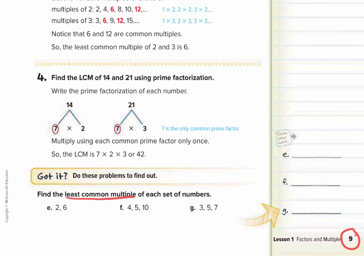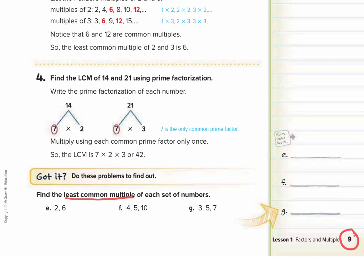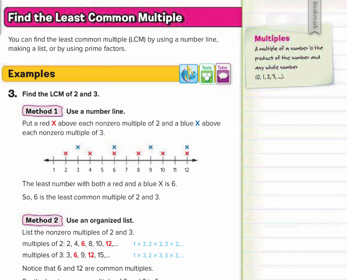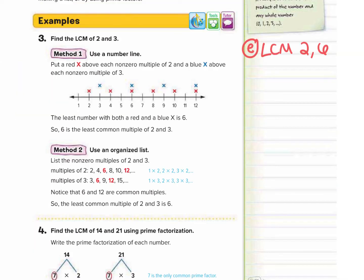We're going to do letter E. We want to find the least common multiple of two and six, and we're going to do it up here in our work zone. To help you remember that it's a multiple — like multiplying the number — I'm going to use a big M to find our multiples. On the top of this part of the M I'm going to put the two, and on top of this part of the M I'm going to put the six. We're going to write the multiples of two along the left side of the M.